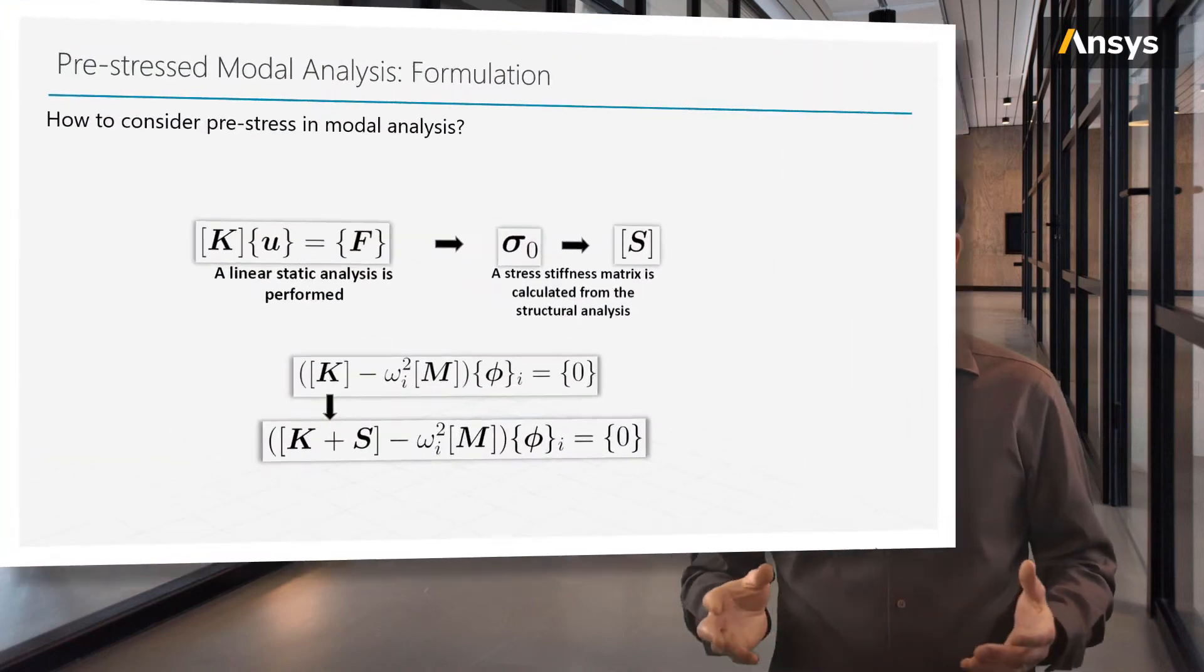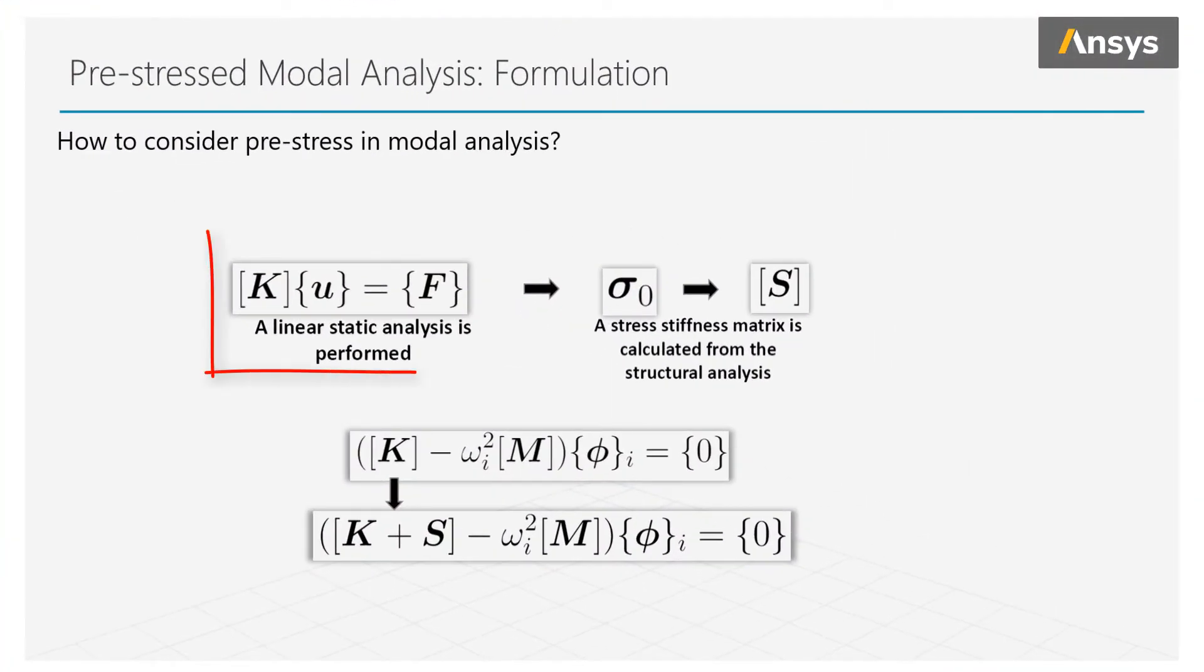How is the pre-stress included into the modal analysis? First, a static analysis is performed to find the stress state of the structure. The stress stiffness matrix is then derived from the structural analysis. The pre-stress state changes the structural stiffness by adding that stress stiffness matrix S to the original structural stiffness K to get a new total stiffness which is K plus S. This new total stiffness is used in the eigenvalue problem to solve for the natural frequencies and modes which now include the pre-stress effects.